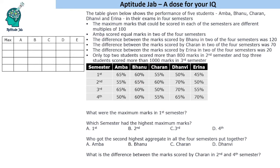We are also given that Amba scored equal marks in 2 of the 4 semesters, and the difference between the marks of Bhanu in 2 of the 4 semesters. We do not know which 2 semesters they are talking about — it could be 1st and 2nd, 1st and 3rd, 2nd and 4th, 3rd and 2nd, or any 2 semesters. From this we can figure out the marks of these students.